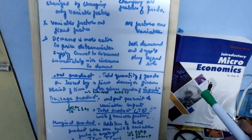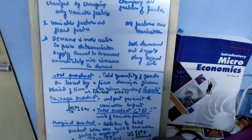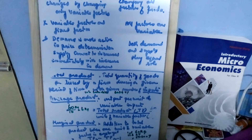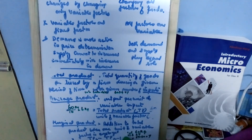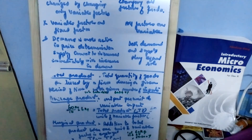For example, 10 laborers make 60 kg of rice and 11 laborers make 67 kg. So total product at N=11 is 67 kg, and total product at N-1=10 is 60 kg. So marginal product is 67 minus 60, which equals 7 kg. So let's do some sums based on this.